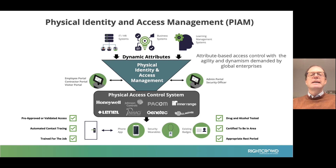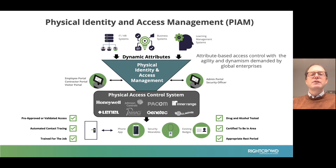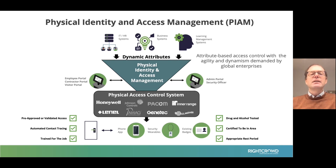Conversely, if the employment status changes or a certain training expires and isn't renewed, then automatically that access will be revoked. Using the PIAM layer makes access control much more robust and it's a much more dynamic way of managing the risk related to access control. In summary, PIAM has two main benefits: first, it automates a lot of access control related processes, providing a return on investment and removing the potential for human errors; and second, it allows you to move from static access control to dynamic access control, leveraging the attribute-based access control capabilities that come with a PIAM platform.